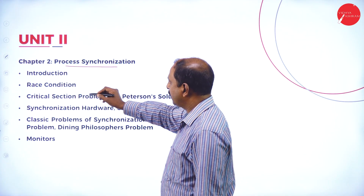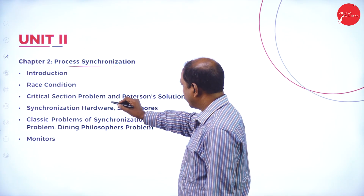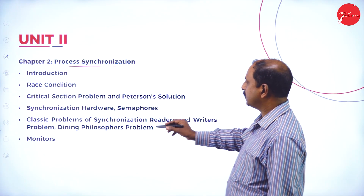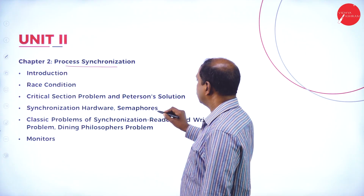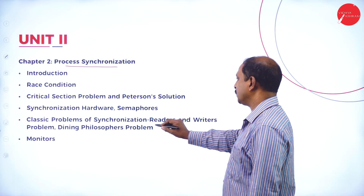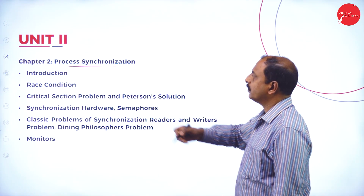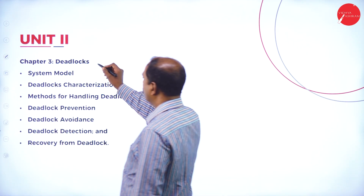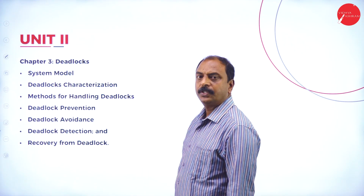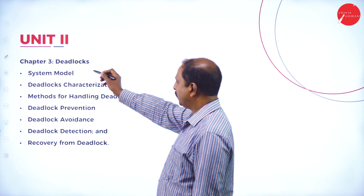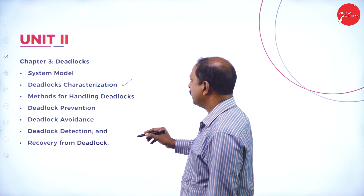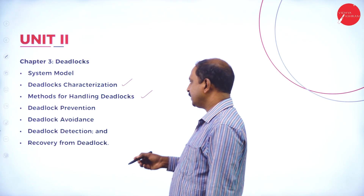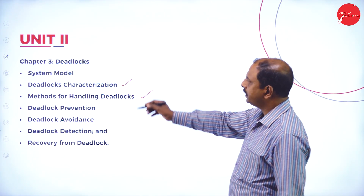Chapter 2 of Unit 2 is process synchronization, covering introduction, race conditions, the critical section problem, Peterson's solution, synchronization hardware, semaphores, and classic problems of synchronization. Chapter 3 covers deadlocks: system models, deadlock characterization, and methods for handling deadlocks — including prevention, avoidance, and detection.